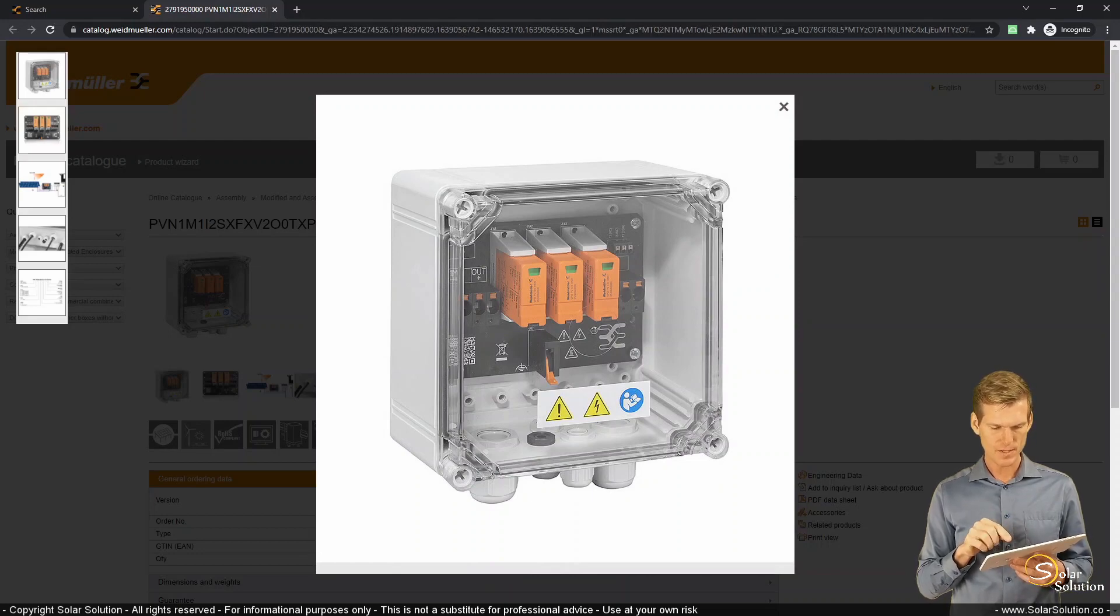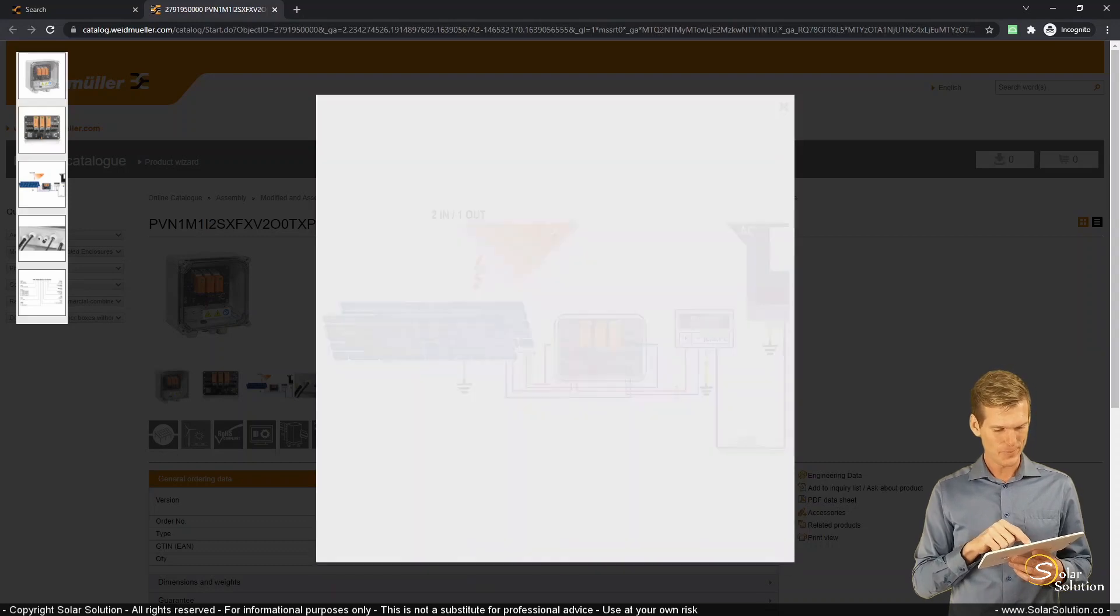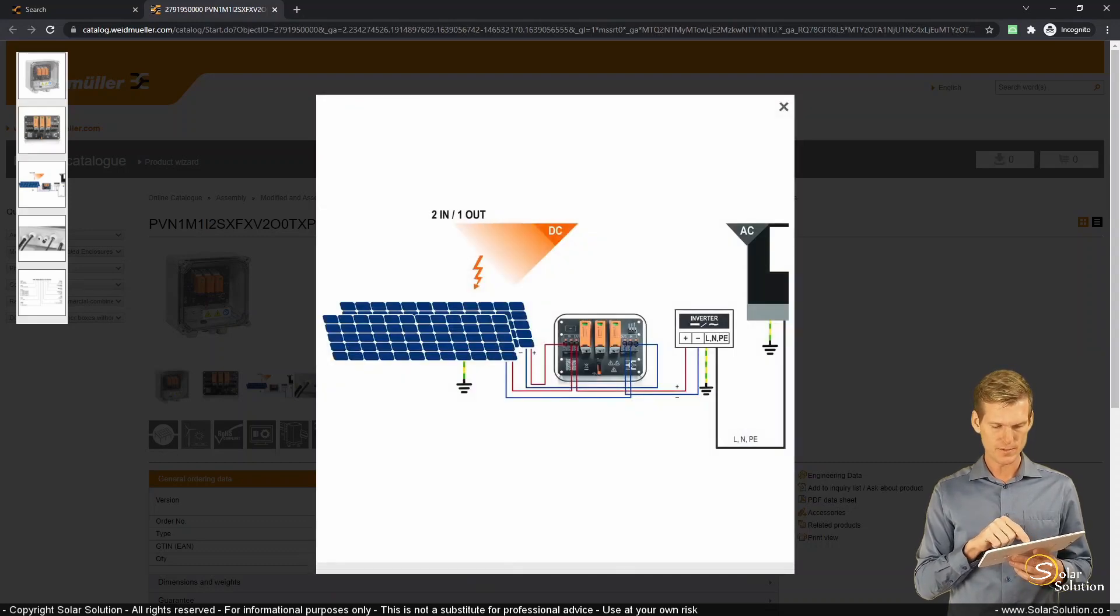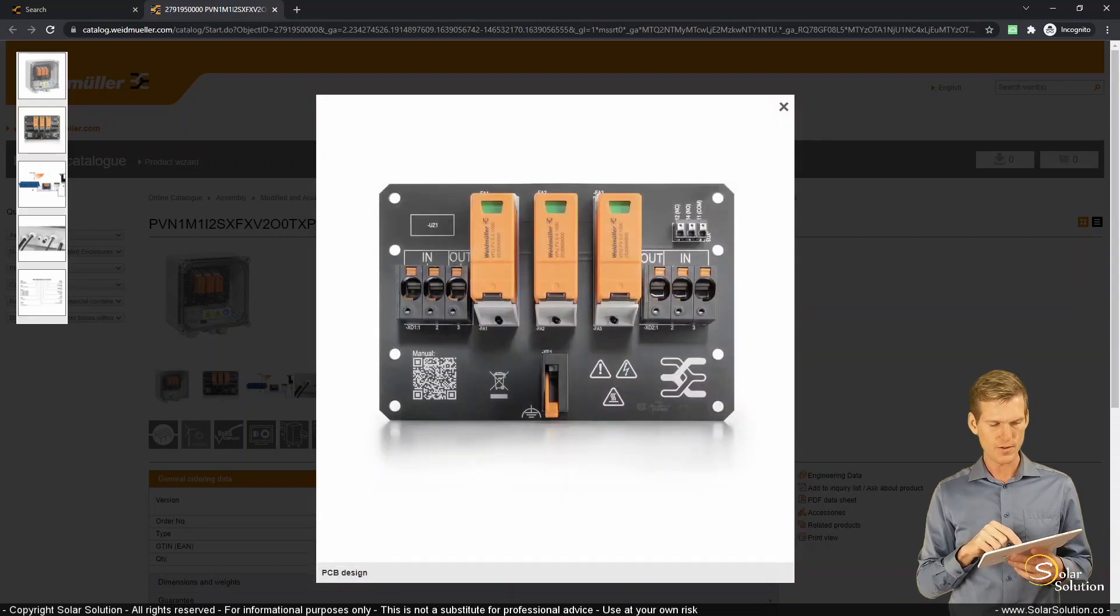This is a very interesting combiner box. It's a very easy to install one, a fairly simple setup. You can see here that the solar panels are plugged directly into the combiner box, and both the positive and the negative are being fed through the combiner box.